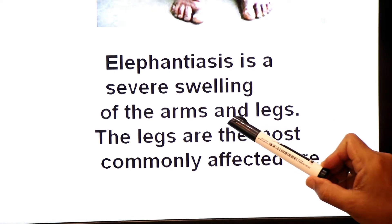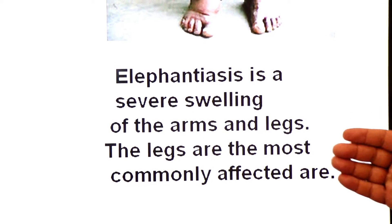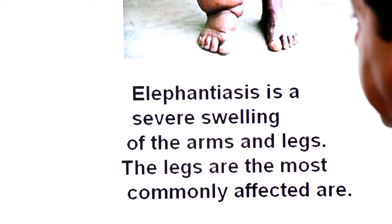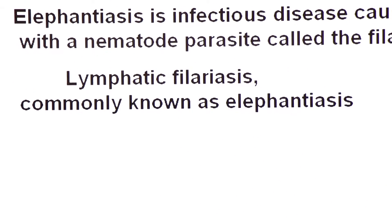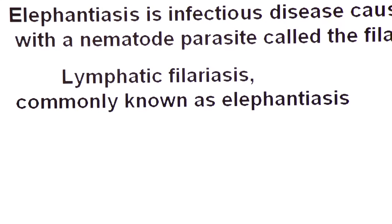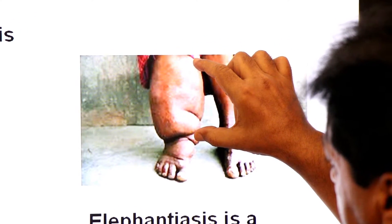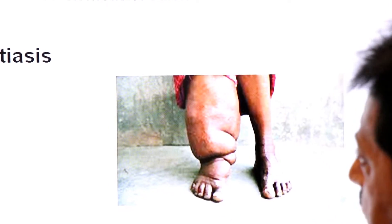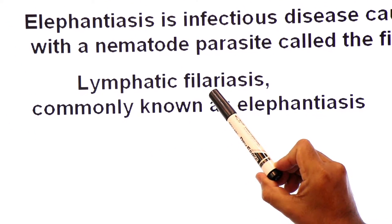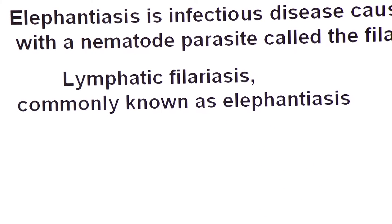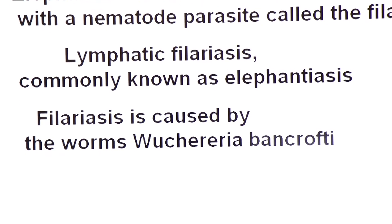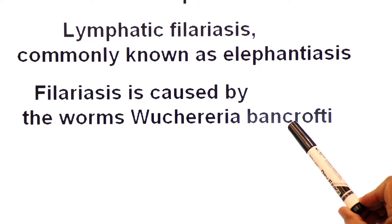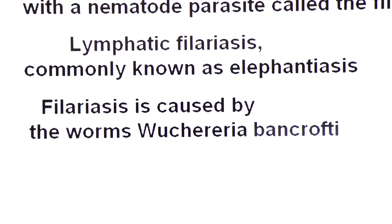Elephantiasis is severe swelling of the arms and legs; the legs are the most commonly affected area. The causative agent is Wuchereria bancrofti. Infection occurs when filarial parasites are transmitted to humans through the bite of female mosquitoes. Different species are known to transmit this parasite, including Culex, Anopheles, Mansonia, and Aedes mosquitoes.